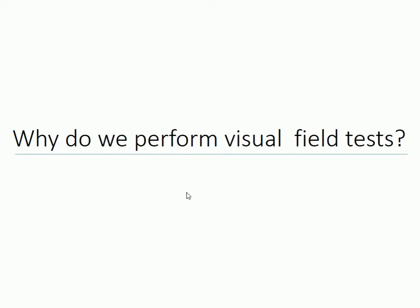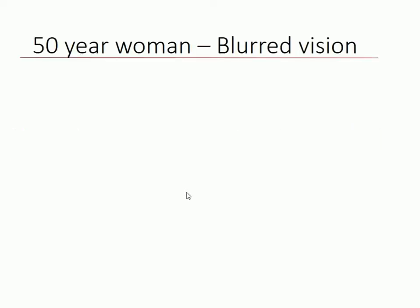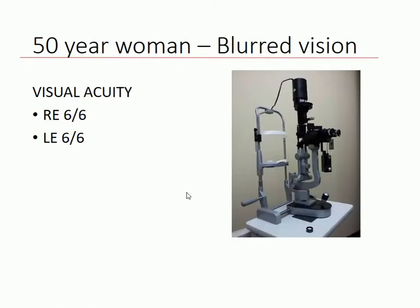The first thing I want to establish is why do we check people's visual fields? Here's an example: a 50-year-old woman presented to me in a general ophthalmology clinic, complaining that her vision was blurred. But when I checked her visual acuity, she saw 6/6 or 20/20 in both eyes, so her vision seemingly was excellent, and everything looked completely normal on examination.